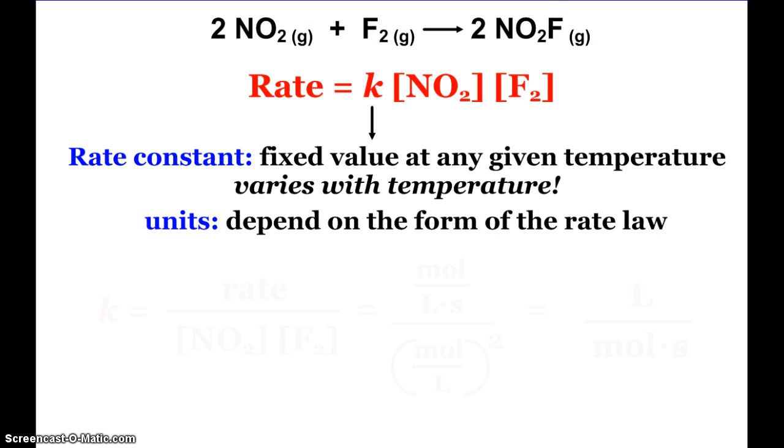Here we have our reaction again and the rate law is rate equals K concentration of nitrogen dioxide times concentration of fluorine. That K is the rate constant. It's a fixed value at any given temperature and that definitely varies with temperature. The units of our rate constant depend on the form of the rate law.